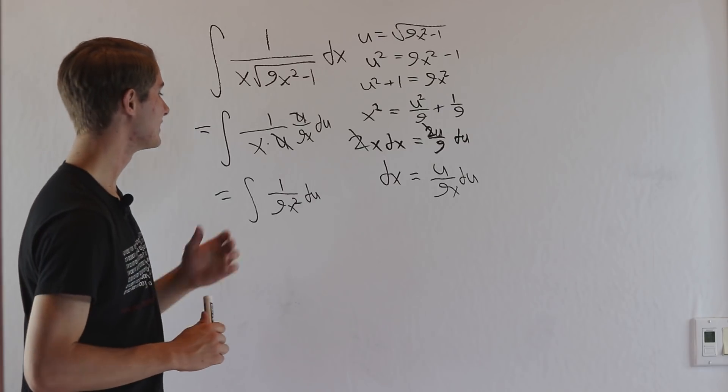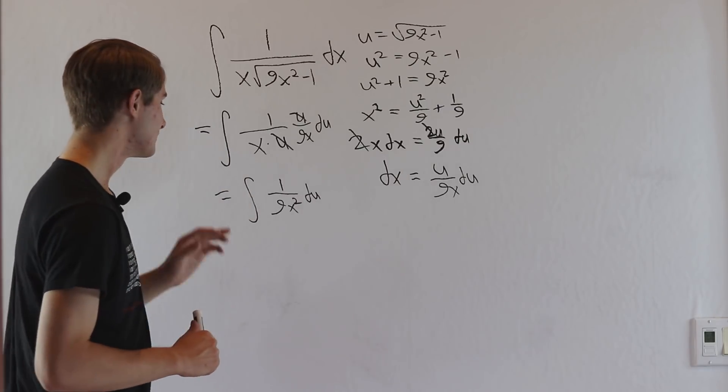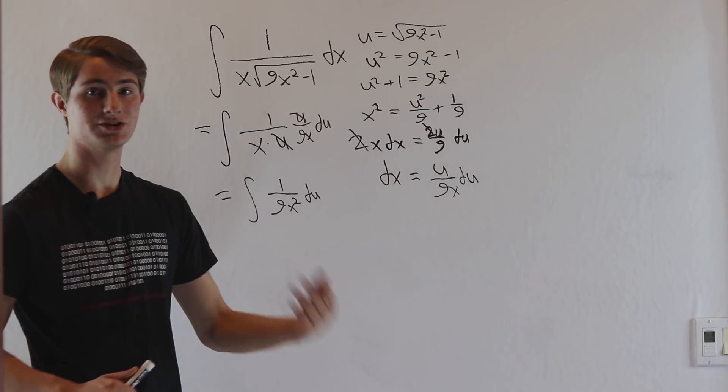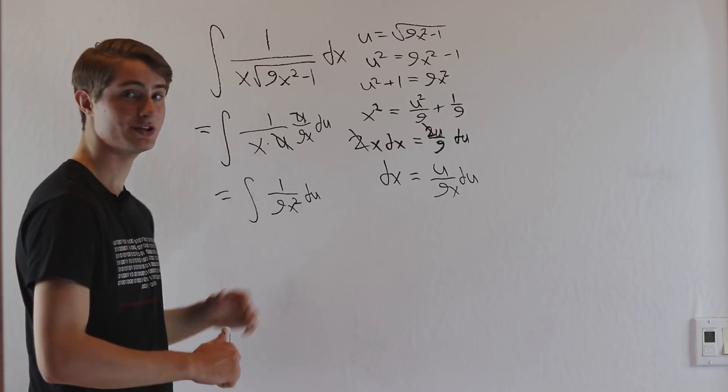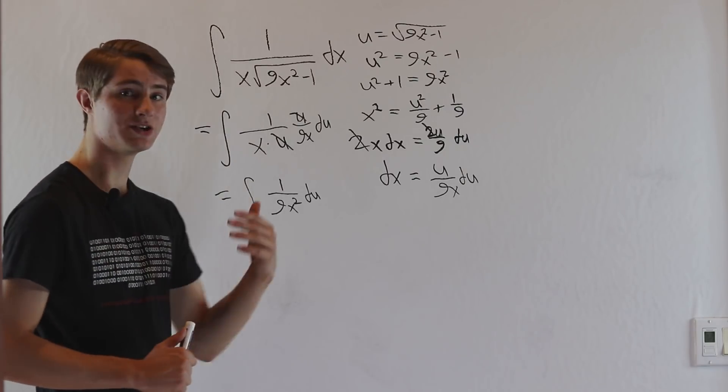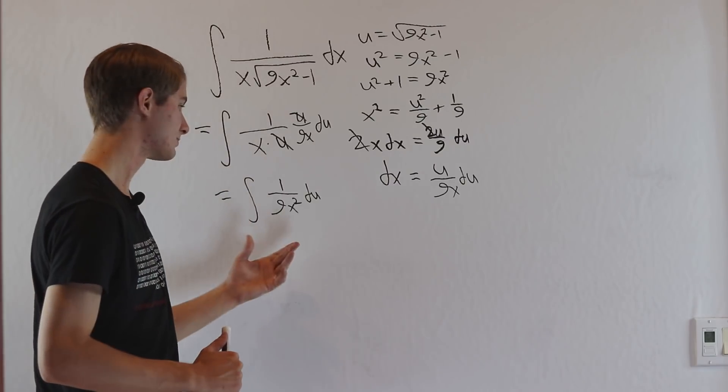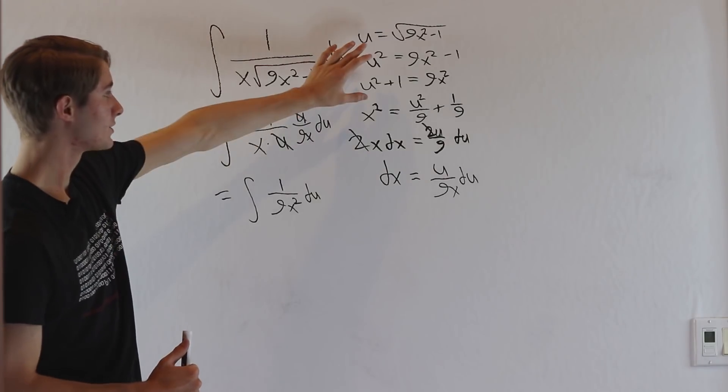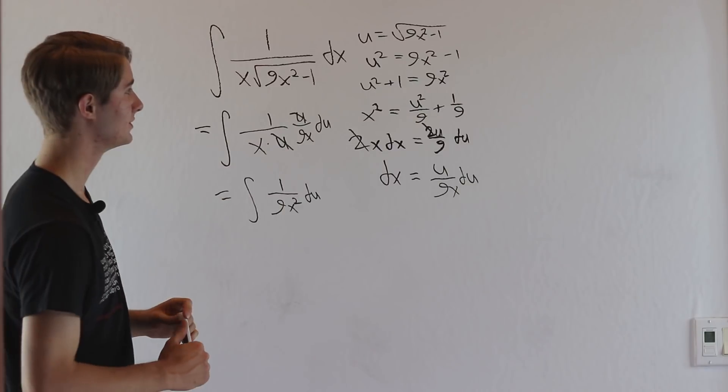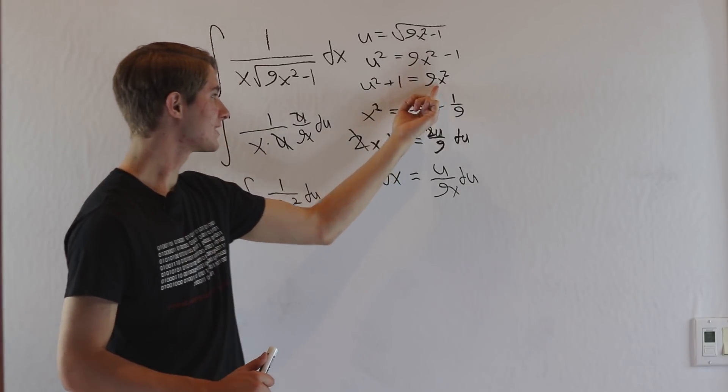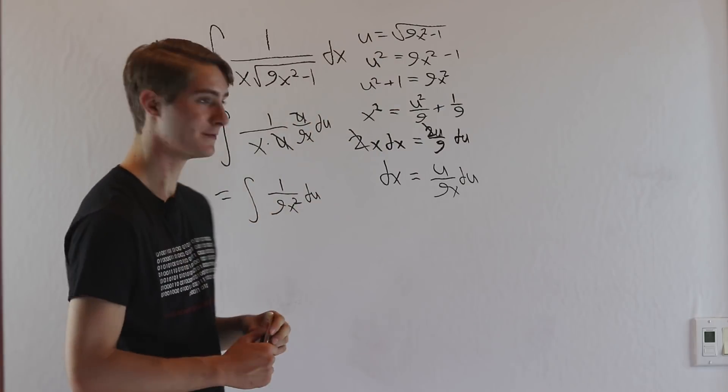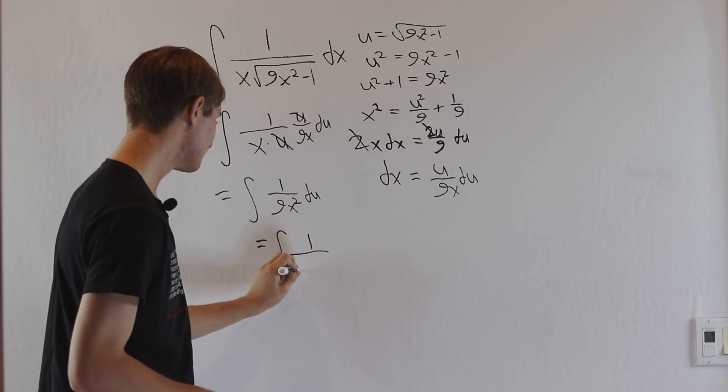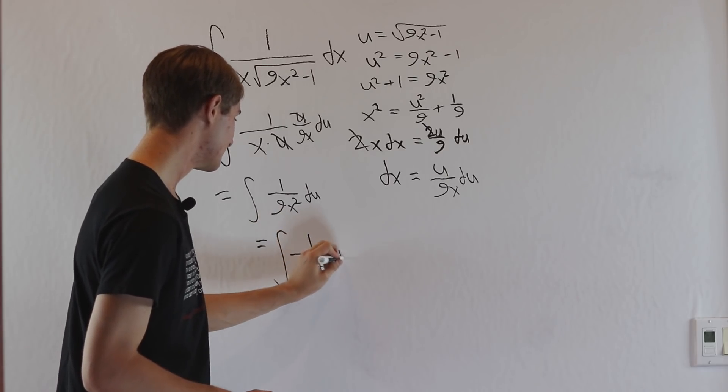That's the first important thing that I think this integral teaches us is sometimes a problem seems like you've gotten to a place where it doesn't make sense and you need to start over and give up on this approach. But sometimes it just takes a little more perseverance and looking at the problem a little more deeply to figure out the answer. And in fact, in this case, if we go back to our work on the original substitution, we see that 9x squared is actually equal to u squared plus 1. So we can easily plug that into our integral here to get the integral of 1 over u squared plus 1 du.